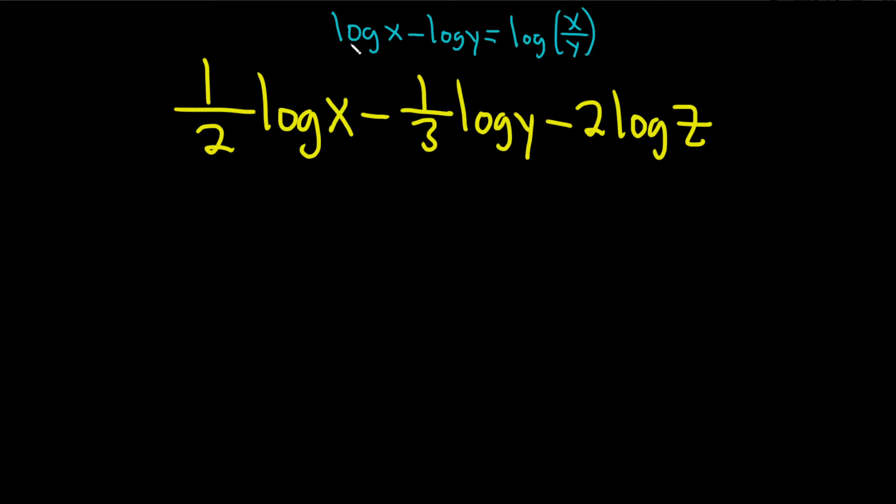So as long as you're subtracting and there's no numbers in front of the logs, you just divide. So here we have numbers in front of every single log. So what we can do is get rid of the numbers. To do that, remember, if you have a number in front of a logarithm, you can just make it the exponent.